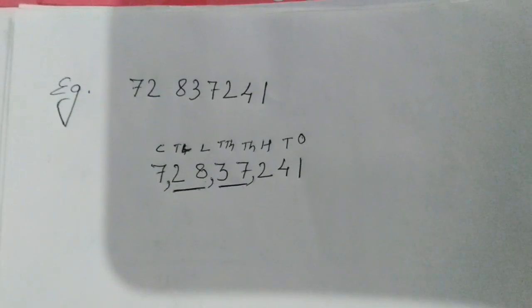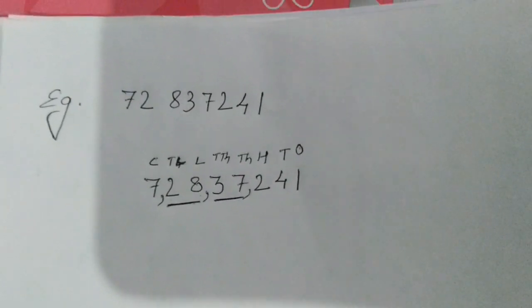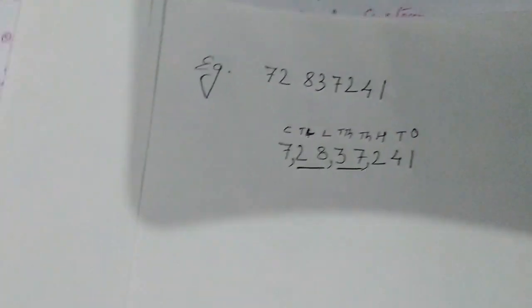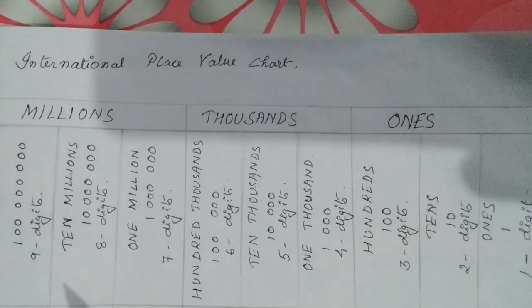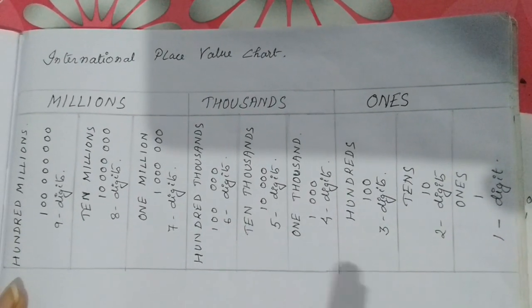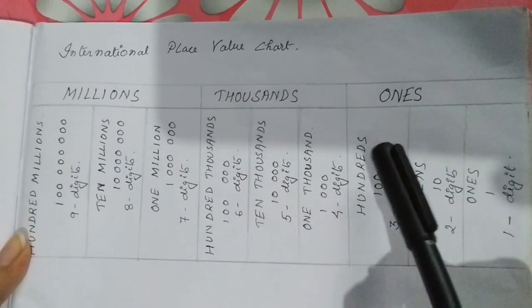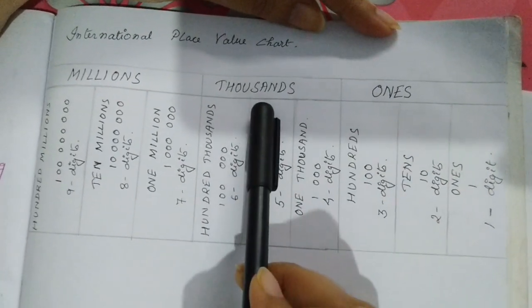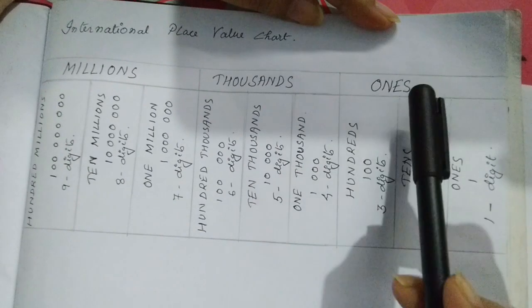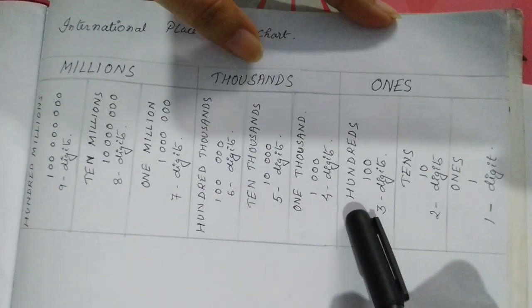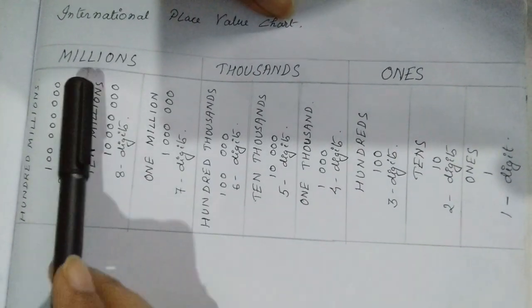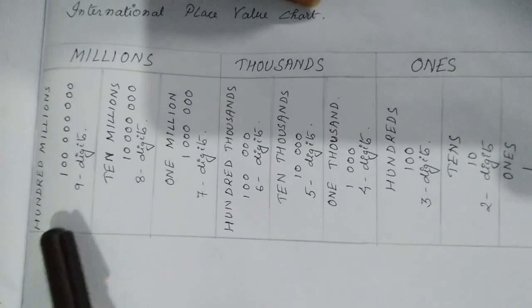Next we will discuss the international number system. Looking at the place value chart, here also we have periods. The periods in the international system are ones, thousands, and millions. Under ones we have ones, tens, and hundreds. Under thousands we have one thousand, ten thousand, and hundred thousand. Under millions we have one million, ten million, and hundred million.